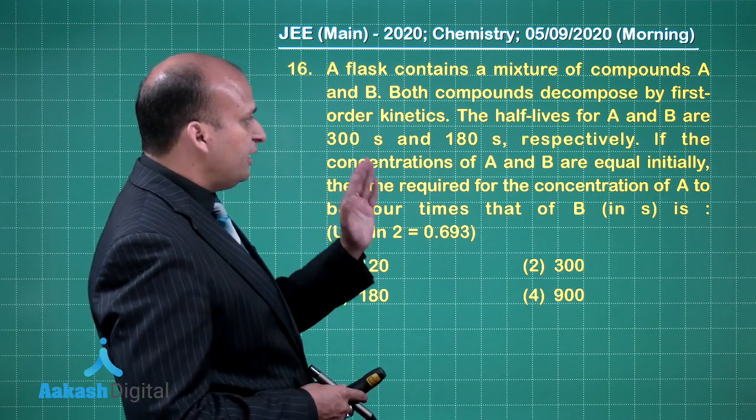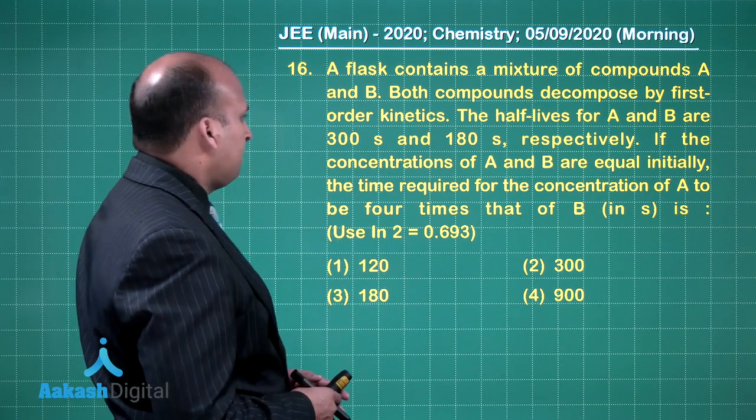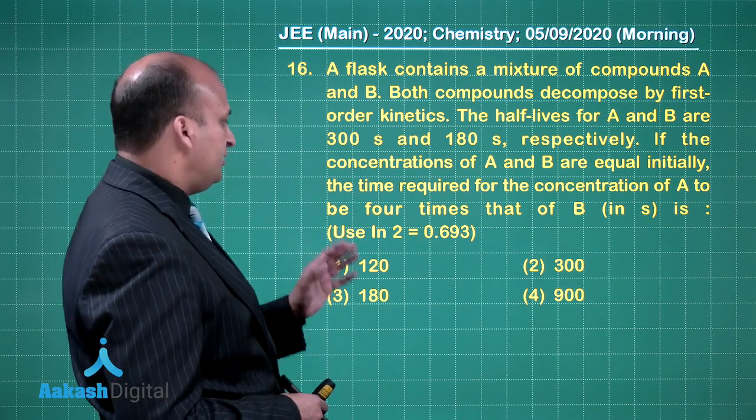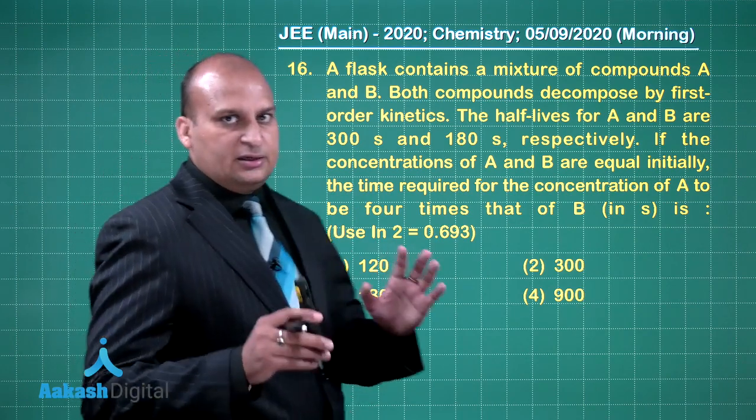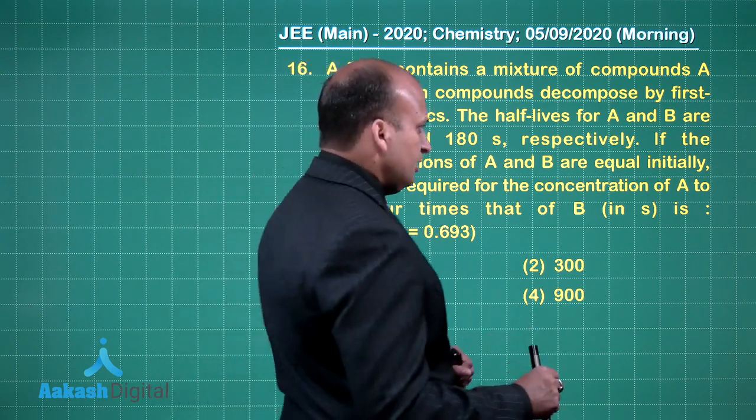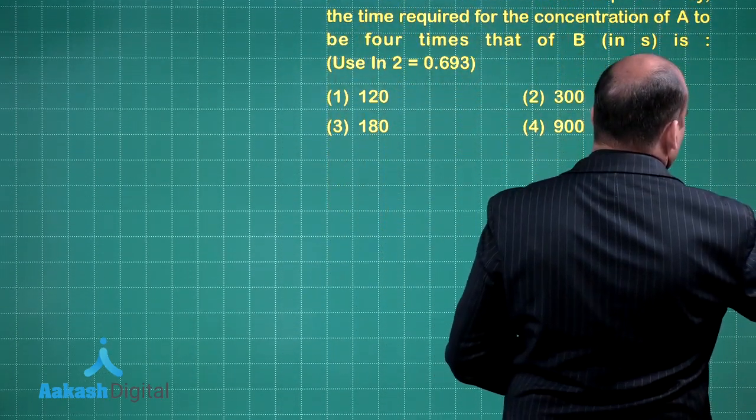If the concentration of A and B are equal initially, the time required for the concentration of A to be 4 times that of B is... See this question can be solved in two ways. I will give you both ways to solve this question.